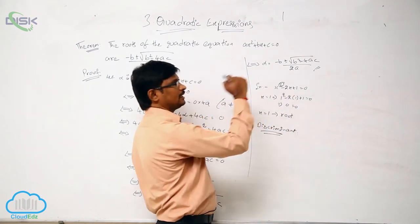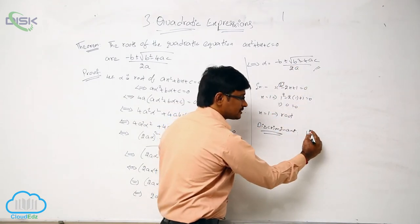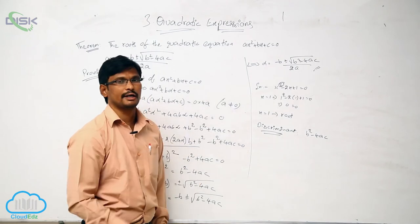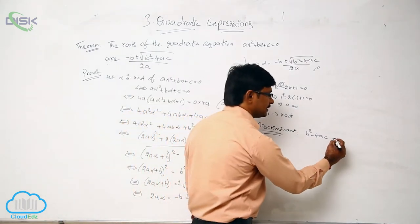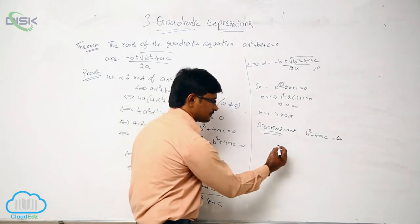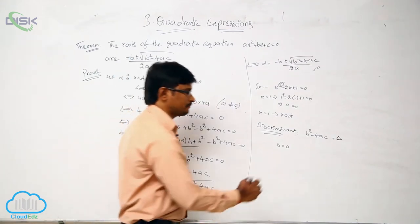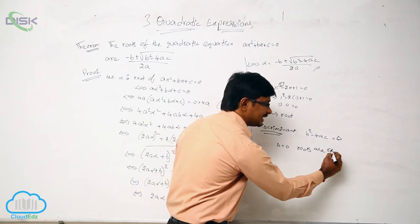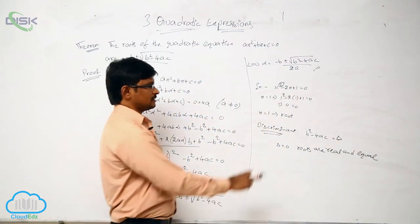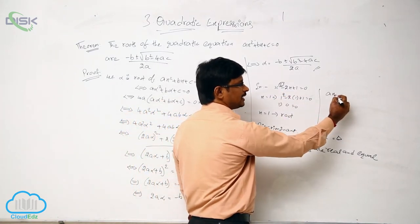The discriminant: in the formula minus B plus or minus the square root of B² − 4ac divided by 2a, the expression B² − 4ac is called the discriminant of the quadratic equation. The discriminant is denoted by the symbol delta (Δ). There are three cases. If delta equals 0, the roots are real and equal.